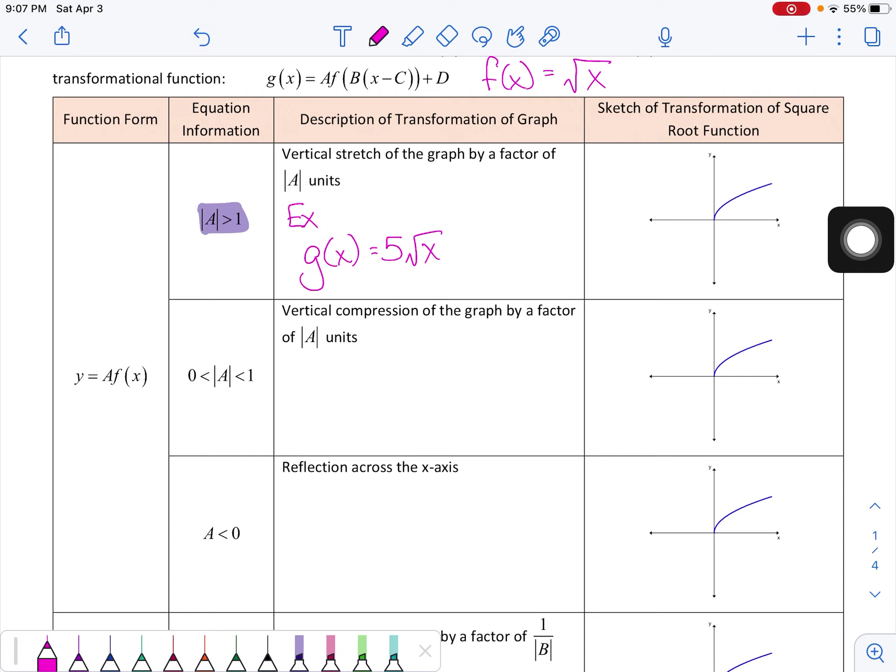It's going to stretch this graph five times further away from the x-axis. So what that might look like is you're going to start at the same point, 0, 0, because if you multiply 0 times 5, you'd still get 0. But all of these other points here are going to be five times further away.